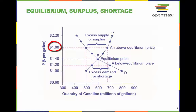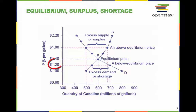At a price above equilibrium, like $1.80, quantity supplied exceeds the quantity demanded, so there is excess supply. At a price below equilibrium, such as $1.20, quantity demanded exceeds quantity supplied, so there is excess demand.